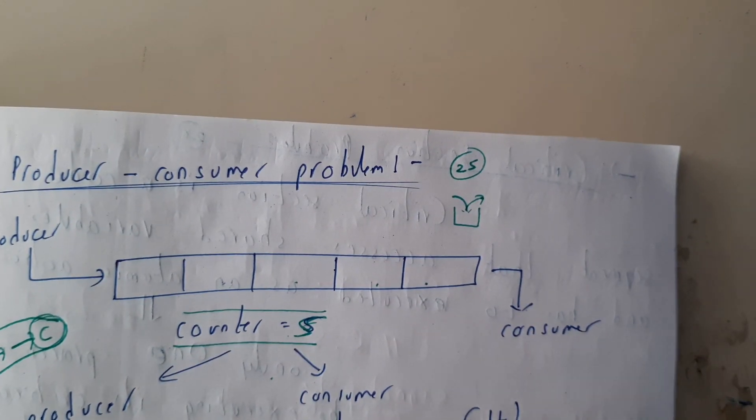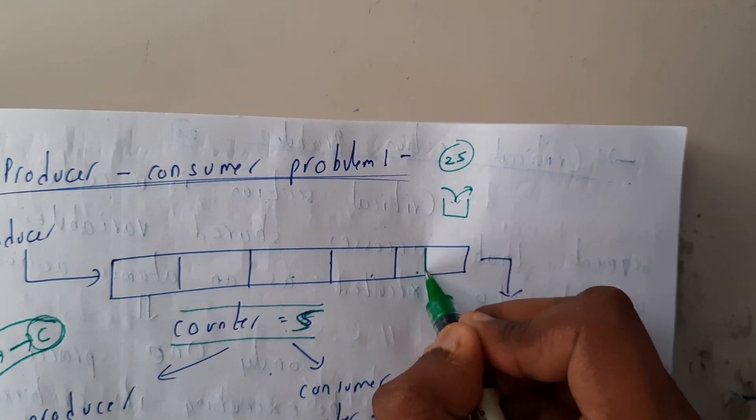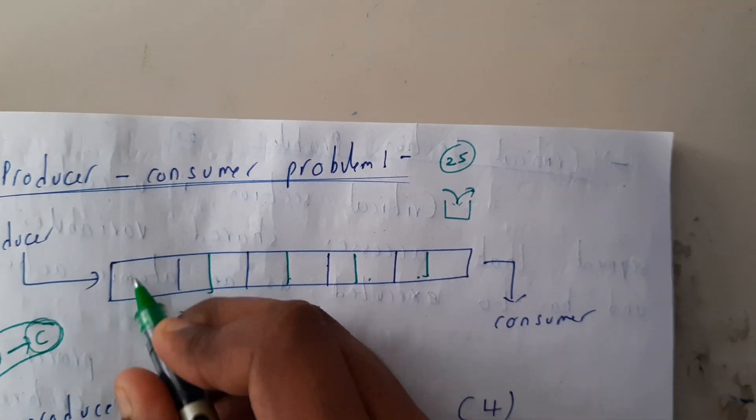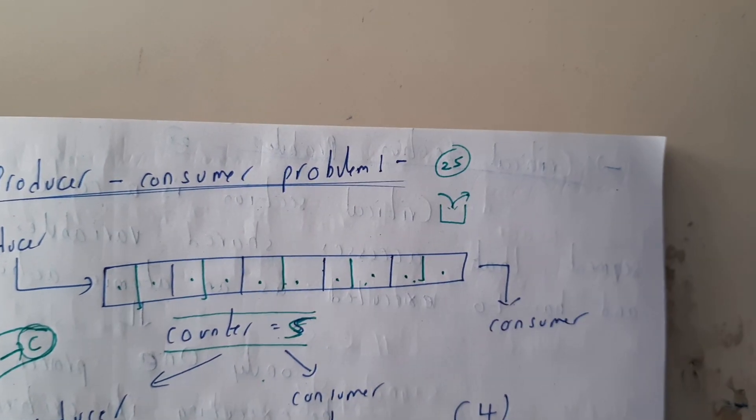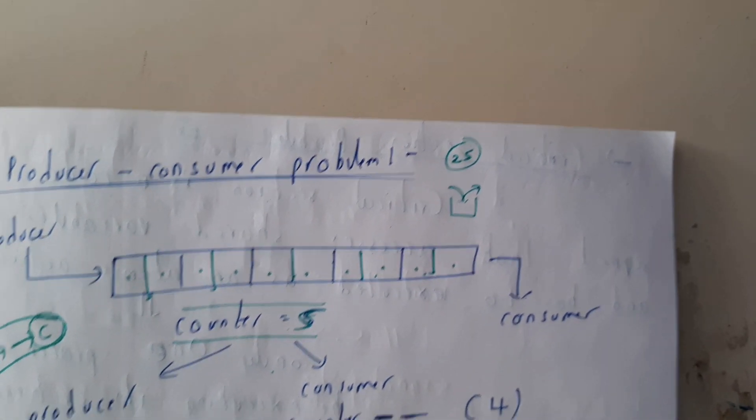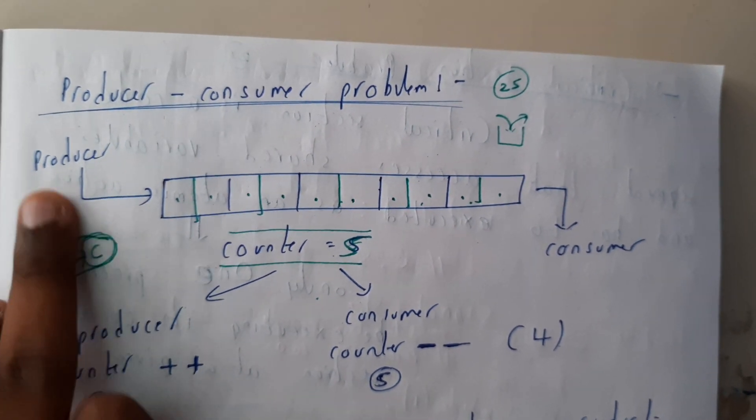Let us assume there are ten blocks or slots. We are having ten slots and the producer is producing items.